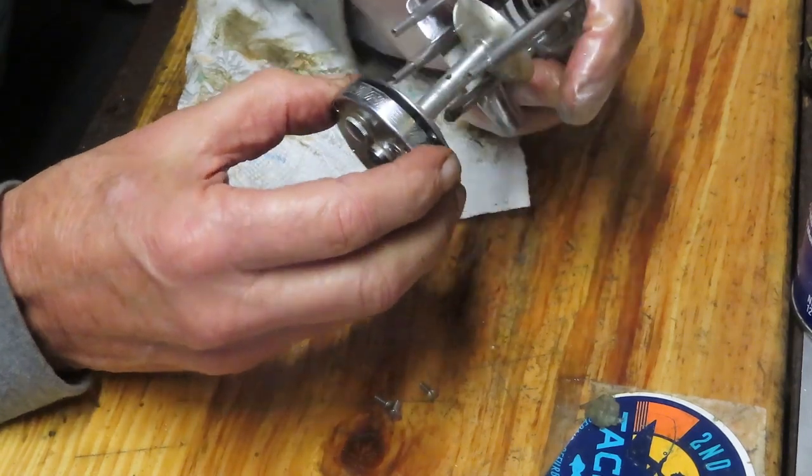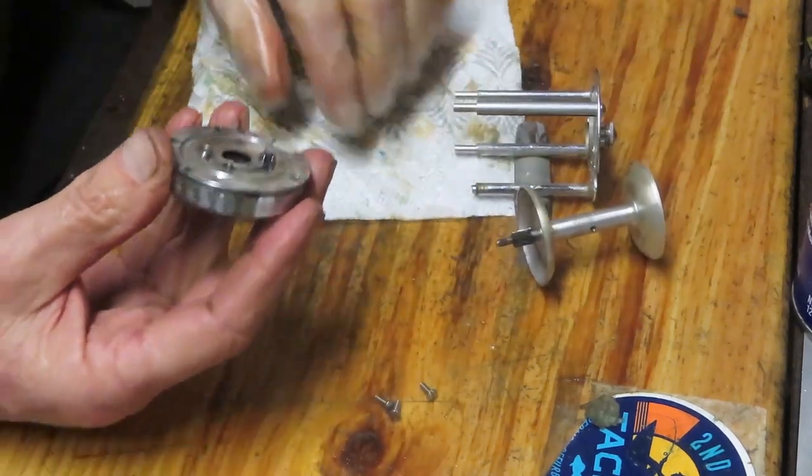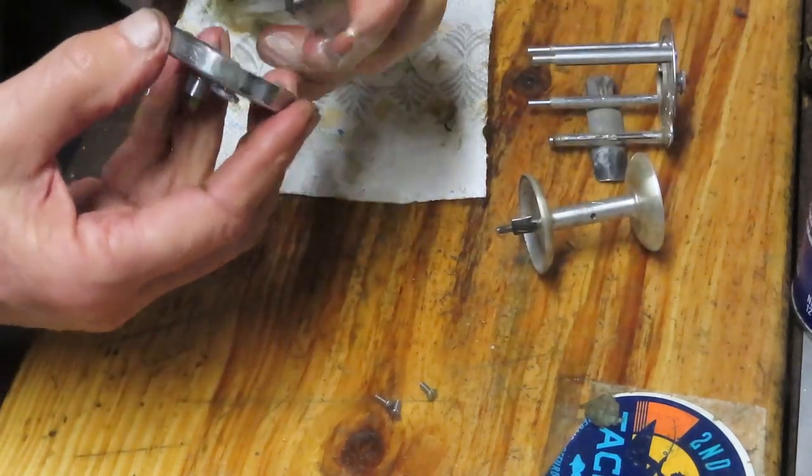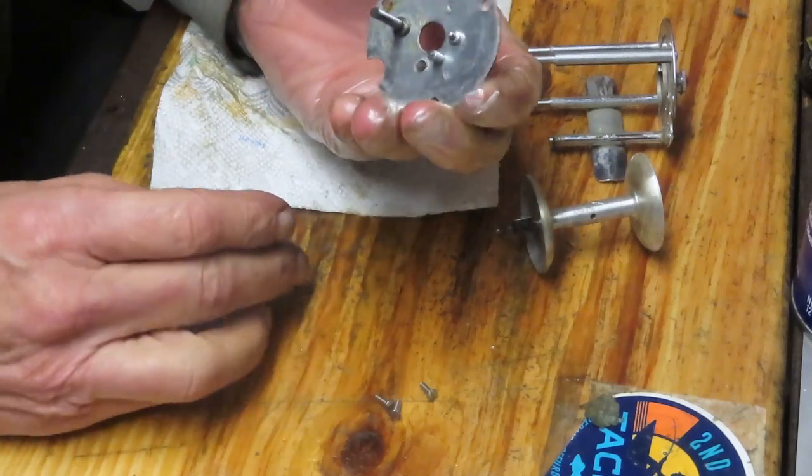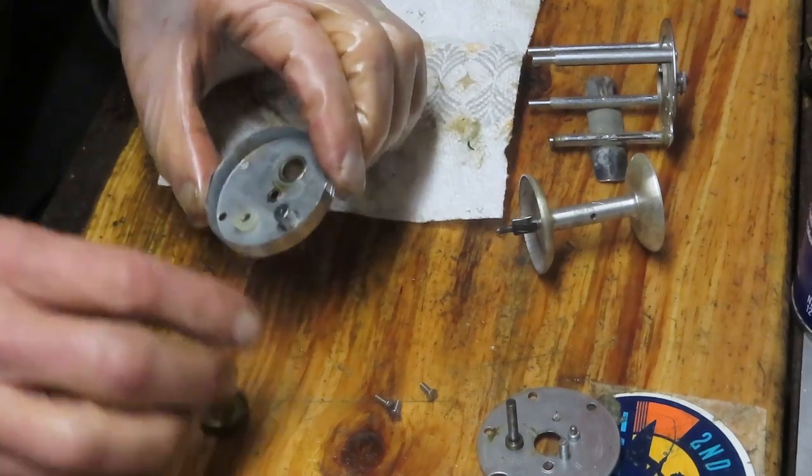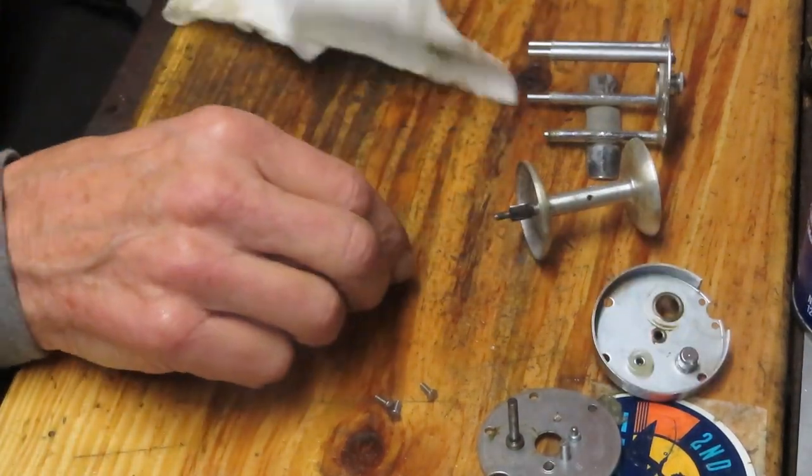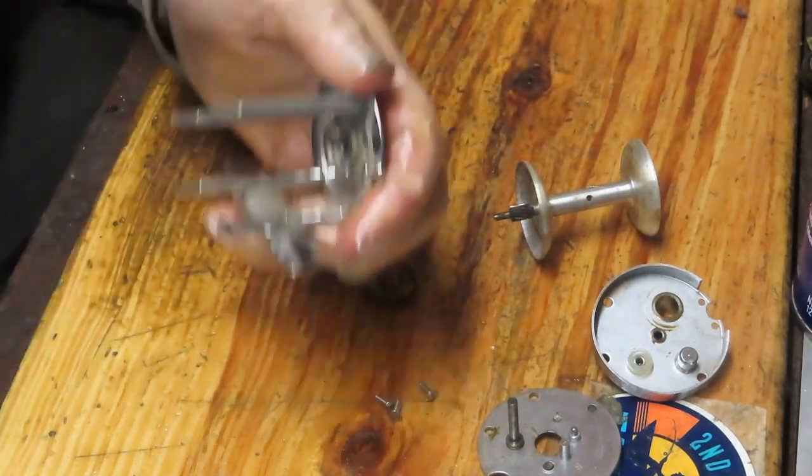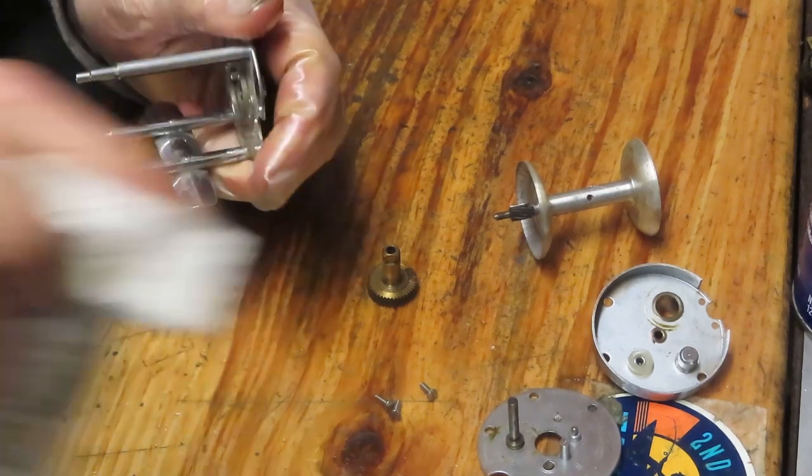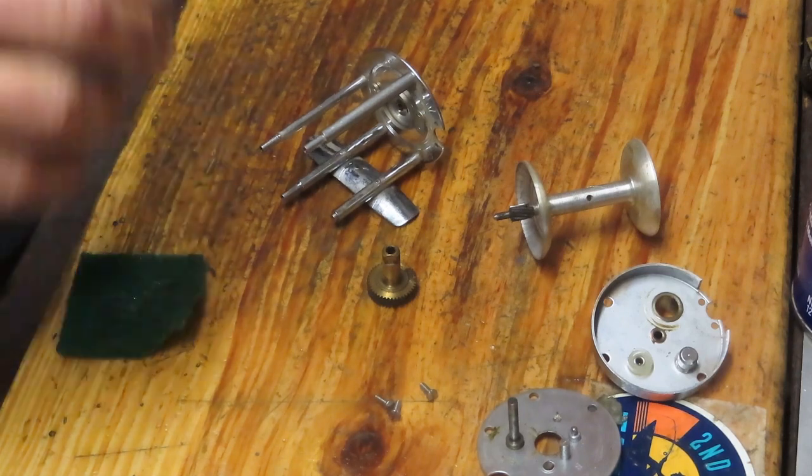That should release the case now. You'll notice that we have the case, the spool, and we have the bridge and under the bridge we have the main gear. That's a rather simple design this way. Okay, we're just going to take those pieces and parts, clean them up. We can get to places where Leo wasn't able to get because we have the reel completely disassembled.